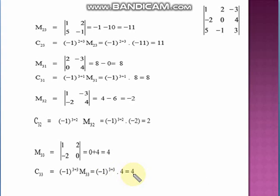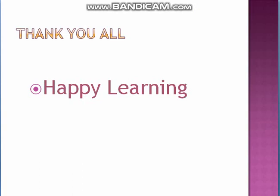In a 2×2 determinant, when you omit the particular column and row where an element occurs, you get a single remaining element as the minor. But in a 3×3 determinant, omitting the particular column and row gives you a 2×2 determinant as the minor, which you then evaluate. That is the key difference. You then multiply the minor by (−1)^(i+j) to get the cofactor. I think you have learned in this video how to find the minor and cofactors. Thank you very much and happy learning.